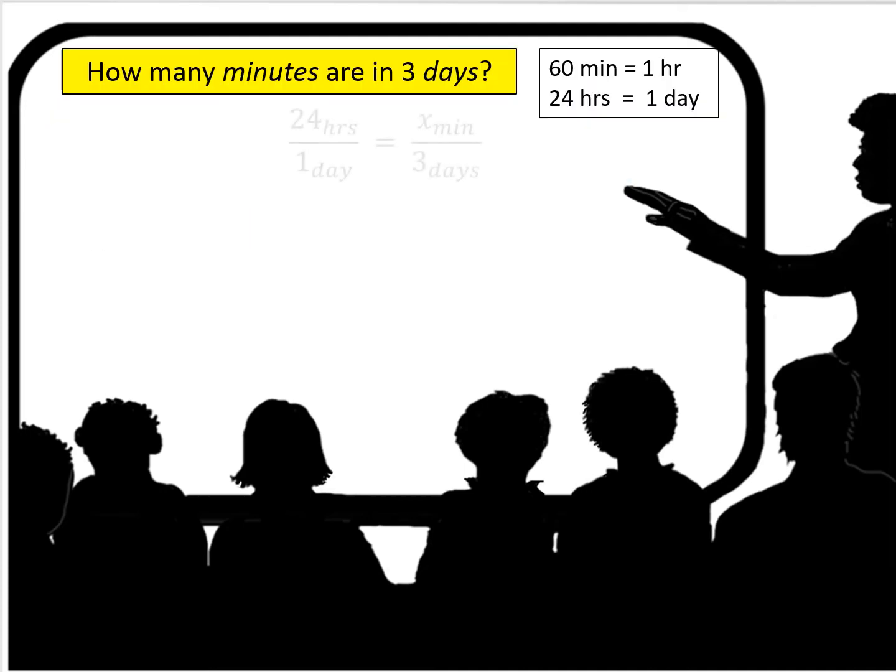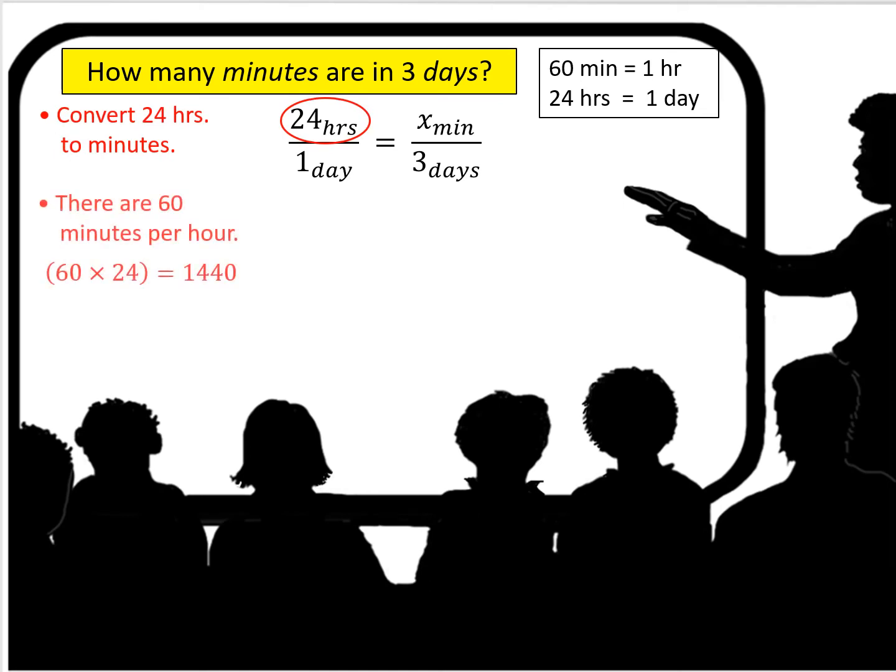Let's use a ratio to find out. We're going to use what we know. And again, we want to set up our ratio in the same units of measure. Well, we know that 24 hours equals one day, but we're trying to find the number of minutes per day. So there are 60 minutes in each hour. Therefore, in 24 hours there is 60 times 24, 1,440 minutes in one day.